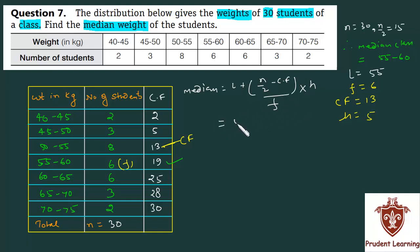L is 55 plus... this gives us 55 plus, 15 minus 13 is 2, 2 by 6 simplifies to 1 by 3.